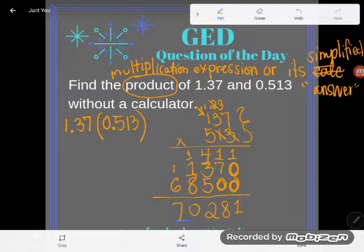So make sure you go slow, check your work, be really neat. Okay, so anyway, I did my multiplication, but I got this number 70281.